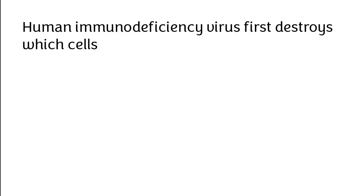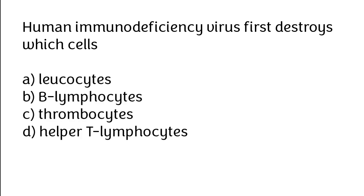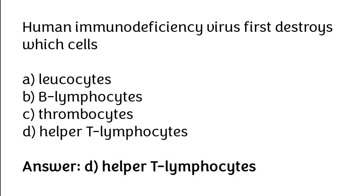Human immunodeficiency virus first destroys which cells? Leucocytes, B lymphocytes, thrombocytes, or helper T lymphocytes. The correct answer is option D: human immunodeficiency virus first destroys helper T lymphocytes.